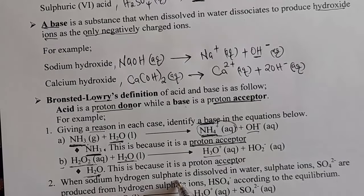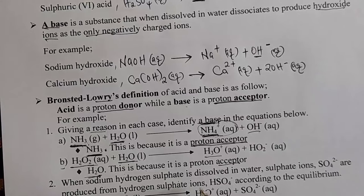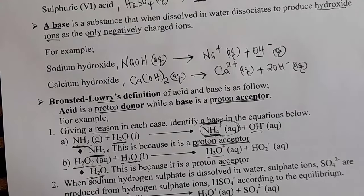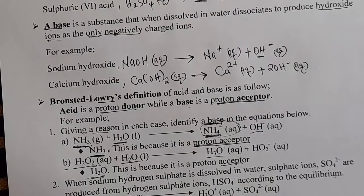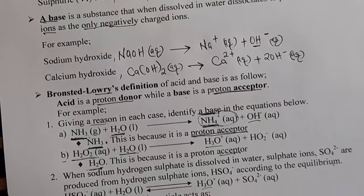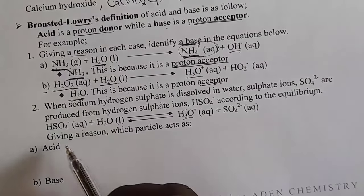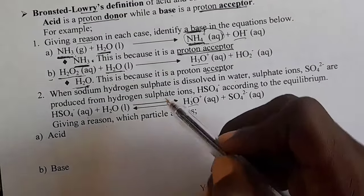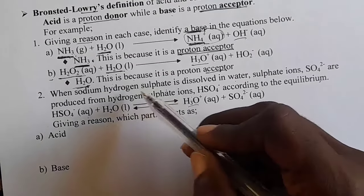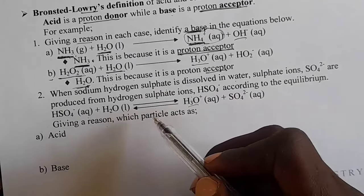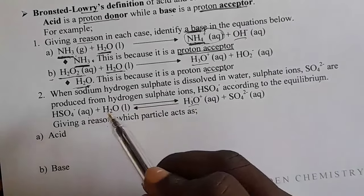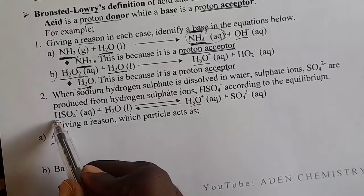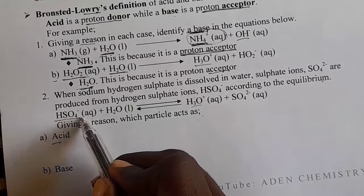Next example: when sodium hydrogen sulfate is dissolved in water, sulfate ions are produced from hydrogen sulfate ions according to the equilibrium equation. We have hydrogen sulfate ion plus water in a reversible reaction producing hydronium ion and sulfate ions. If such a question involves a reversible reaction and no direction is specified, take your answer based on the forward reaction. Which particle acts as an acid? Let's check hydrogen sulfate ion.